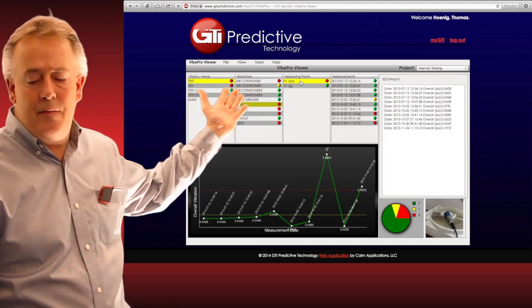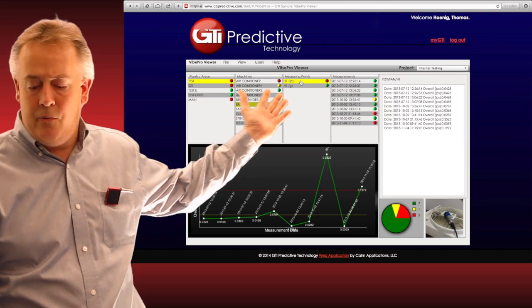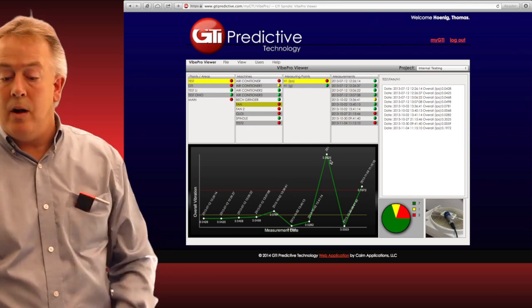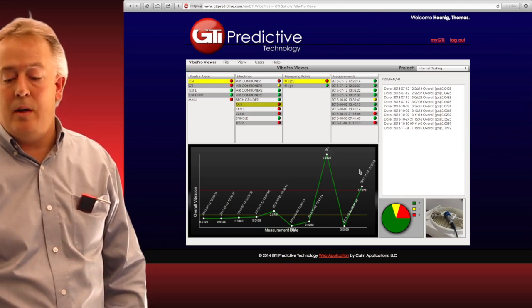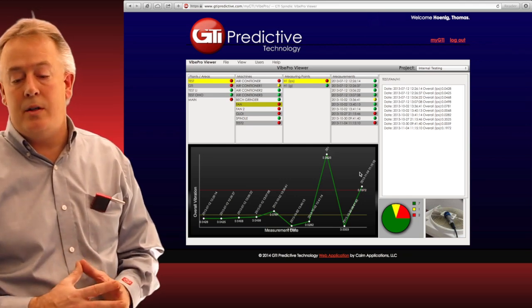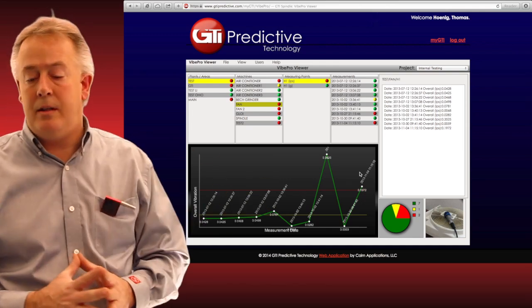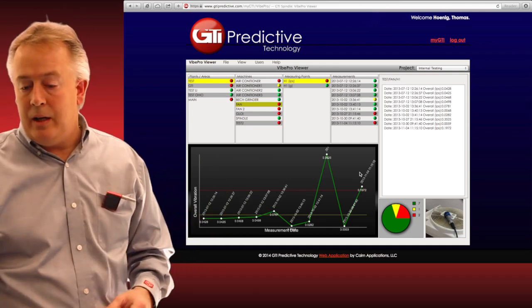You can see immediately I have that nice trend that I had from before. You can see where it was below the yellow, when it crossed the yellow threshold, where it went above the red, below the yellow, and above the red again in a nice pie chart depicting how many times it went over the red, how many times it went over the yellow, how many times it's been in the green. Now we can simply drill down on any particular reading at any time and see the spectrum.